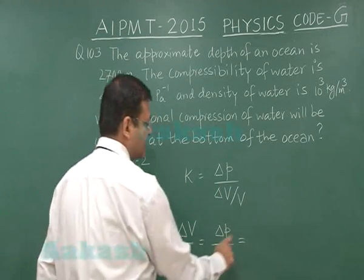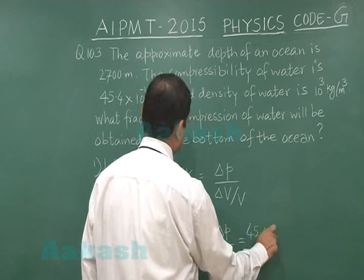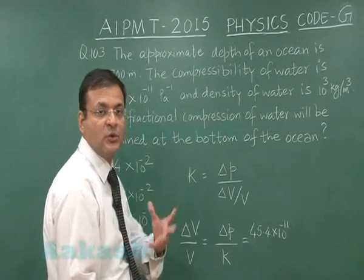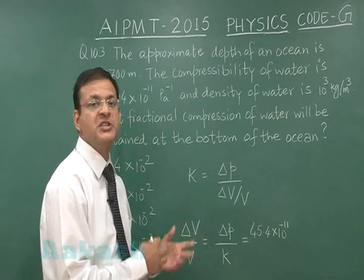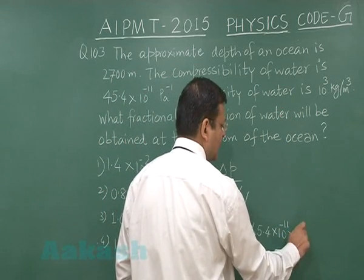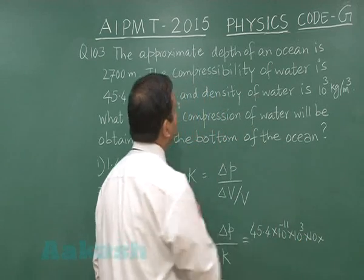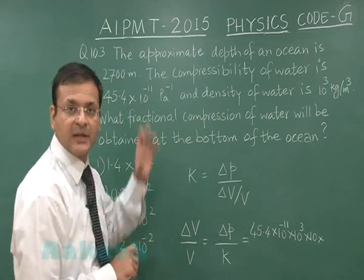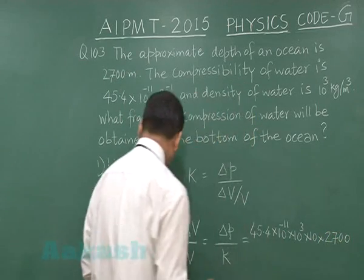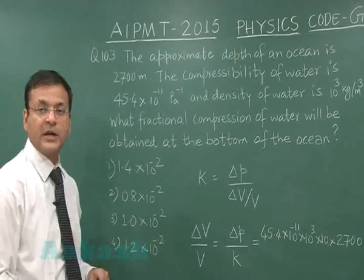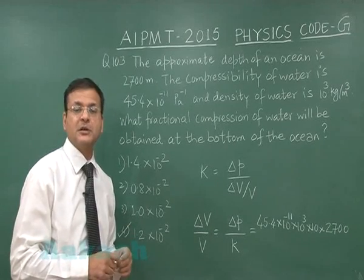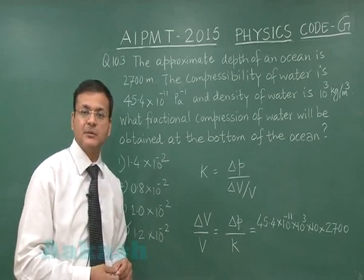The compressibility value is 45.4 × 10⁻¹¹. ΔP is the change in pressure, given by ρgh, where ρ = 10³, g = 10, and h = 2700 meters. Calculating all together gives the answer 1.2 × 10⁻². Marking option 4 as the answer for question 103. Moving on to question 104.